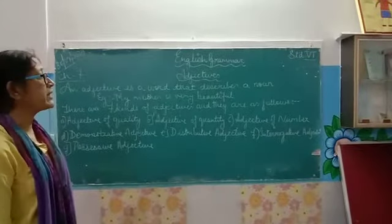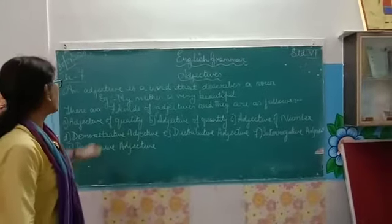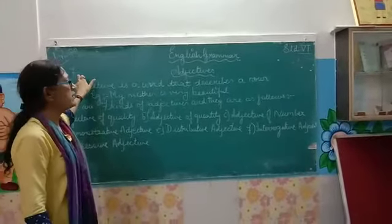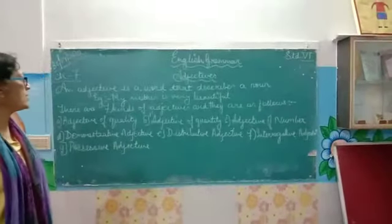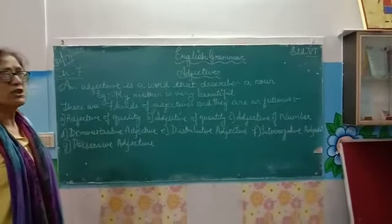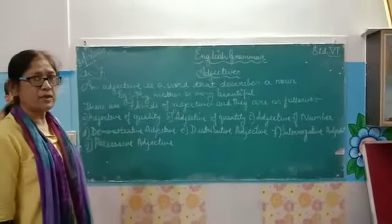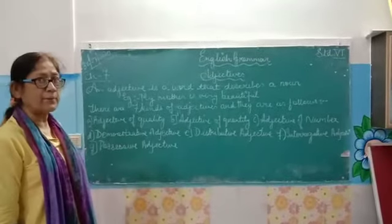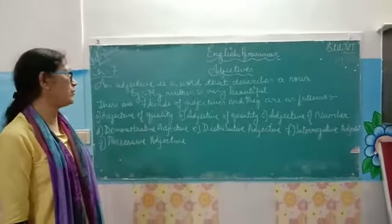Morning students, today we will continue with English Grammars, chapter number 7. The title is Adjectives. What exactly is an adjective? An adjective is a word that describes a noun. Example: my mother is very beautiful.